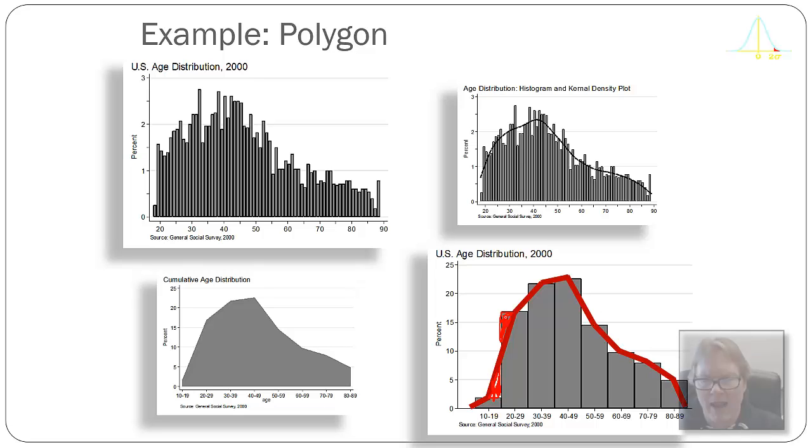And in that regard, these are absolutely equal representations of the data, and you should feel free to use either one. Realistically, the one you use will be dependent upon the norms of whatever area of research you're working in. I think in the social sciences, most people are going to use a histogram, and in the hard sciences, you may be more likely to see a frequency polygon.